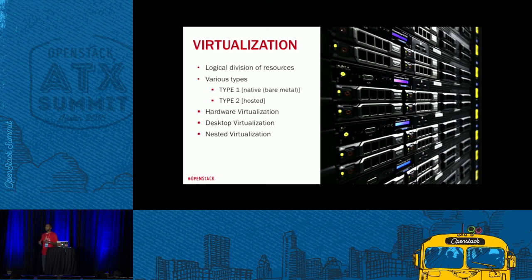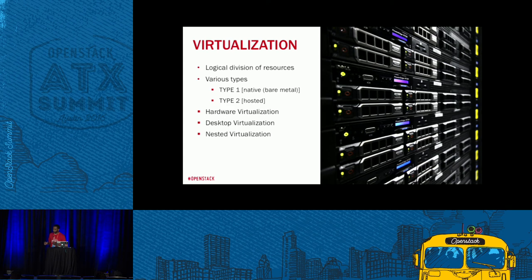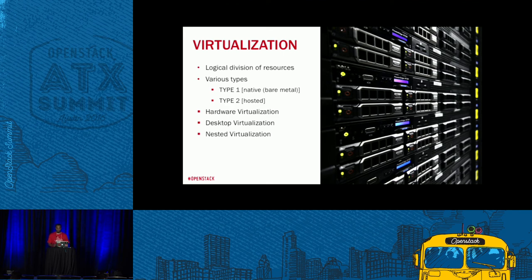You've got type one, which is bare metal native — you can take an actual physical machine and it's seen as a virtual machine. Type one native hypervisors function at the bare metal level; they know what's going on with the actual physical components of that particular server.